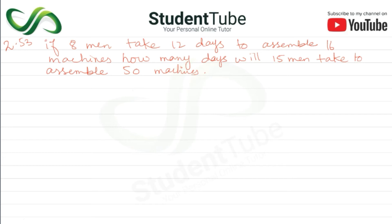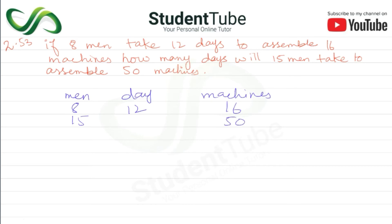...how many days will 15 men take to assemble 50 machines? So here, first we write: men = 8, days = 12, and machines = 16. How many days will 15 men take to assemble 50 machines? Here the unknown is X.